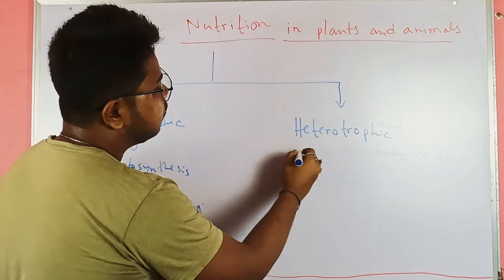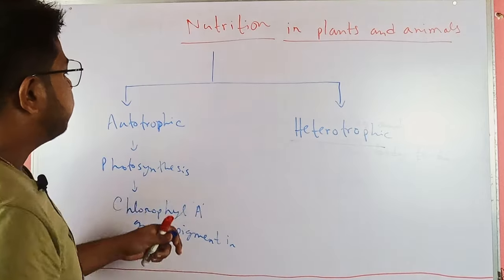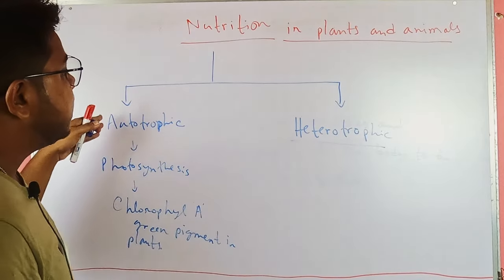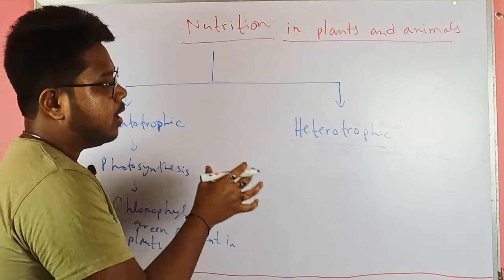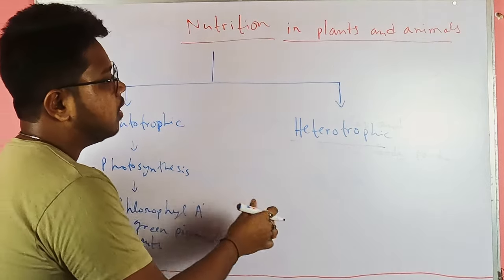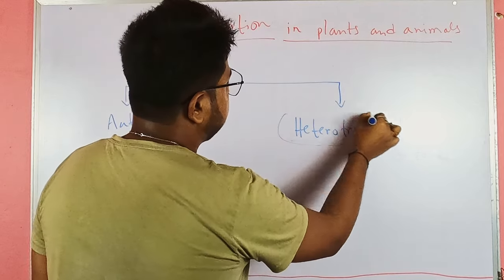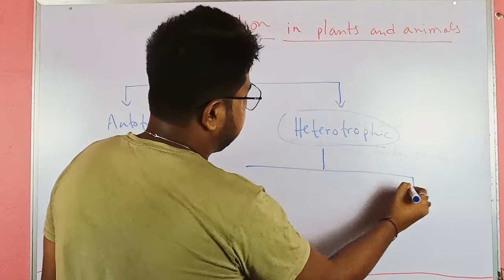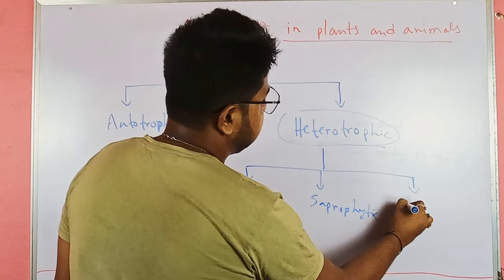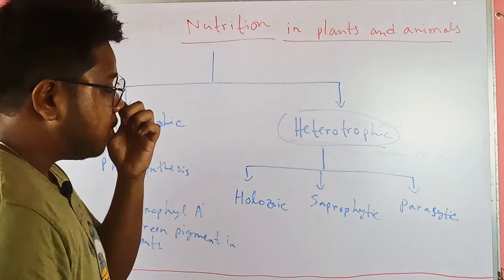Organisms without chlorophyll follow heterotrophic nutrition, where they absorb their nutrition from green plants and assimilate it. Heterotrophic nutrition is of different types: holozoic, saprophytic, and parasitic.